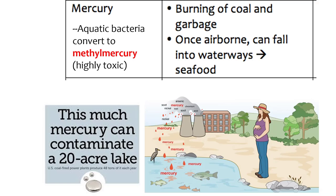Mercury is another problem because as we burn coal and garbage, we release mercury. Once it's airborne, it falls into waterways, gets into the sea, and our seafood contains mercury. Aquatic bacteria convert it into methylmercury, which is actually more toxic than mercury. It does not take much to contaminate a 20-acre lake, and a U.S. coal-fired power plant actually makes 48 tons of it.